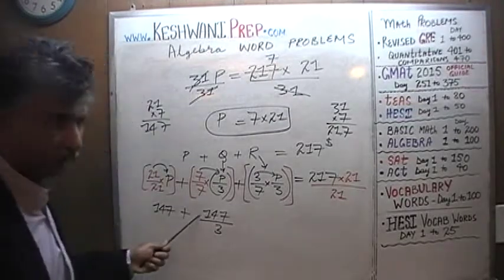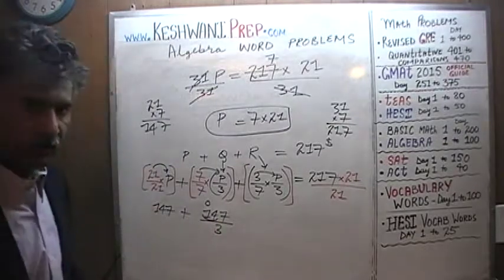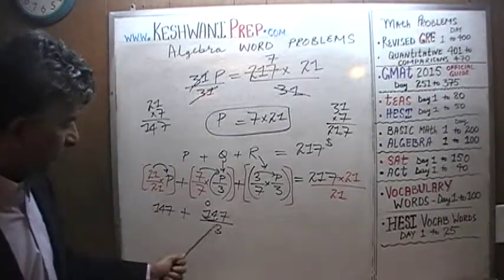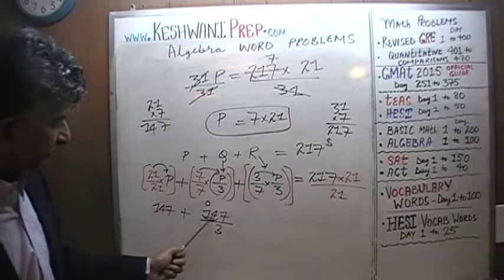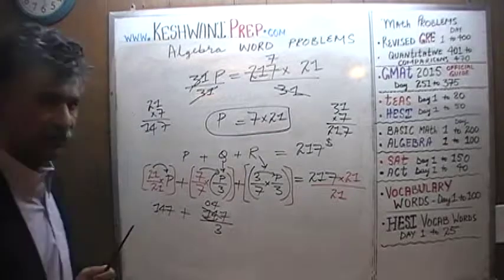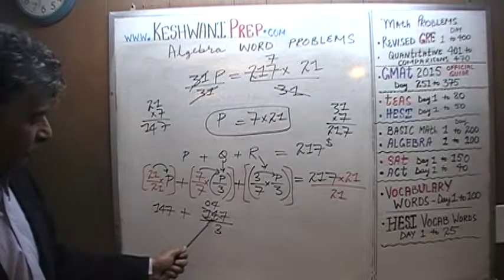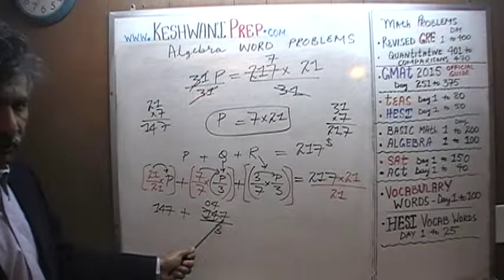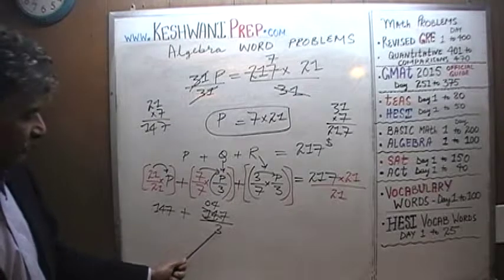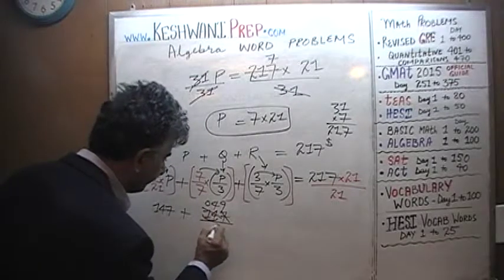How many 3s does 1 have? 1 has no 3, then 1 joins the 4 and becomes 14. How many 3s does 14 have? 14 has four 3s, four 3s are 12. Once we take away 12 from 14, the remaining 2 joins the 7 and becomes 27. How many 3s does 27 have? 27 has nine 3s.